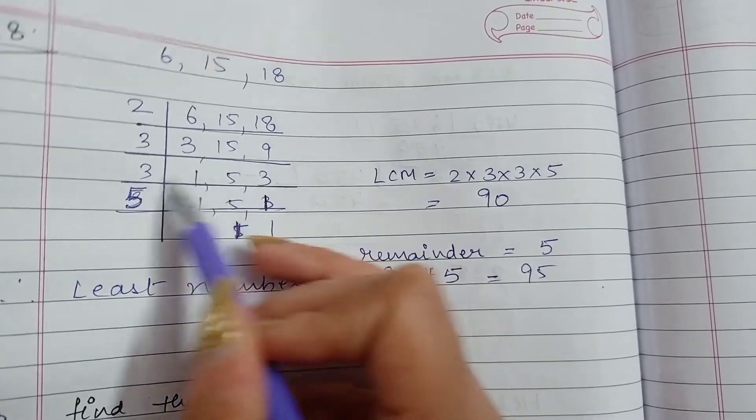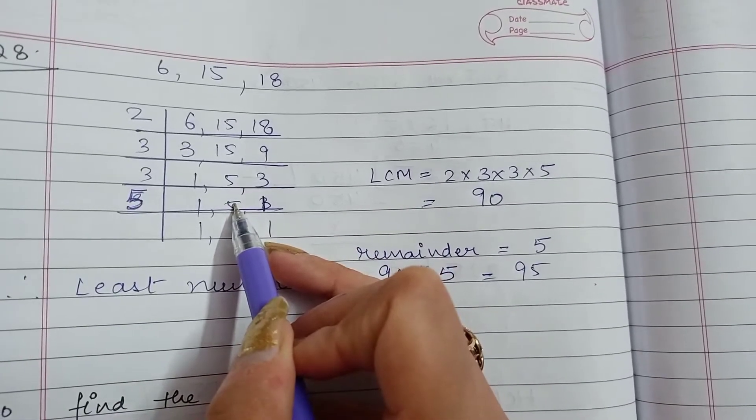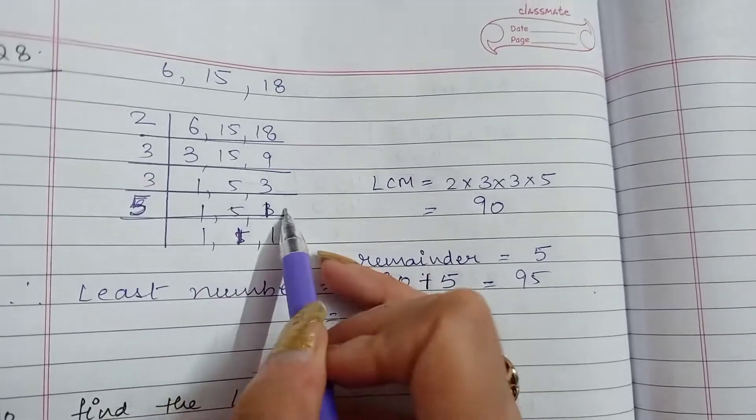Again with 3 because 1, 3 is left. So I have written 3, 1's are 3. 5 is not divisible by 3. Copied as it is. 3, 1's are 3.